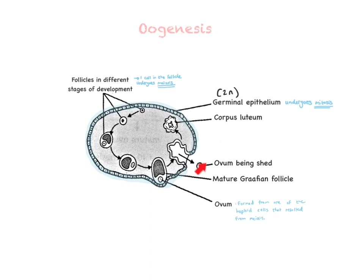At the end of this process, you have a structure called the Graafian follicle — a very important term. It is the most mature follicle and contains the mature ovum. When the Graafian follicle has reached maturity, it will burst — which is called ovulation — and one ovum is released from the Graafian follicle.